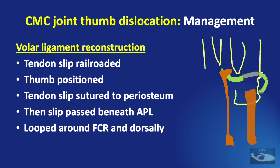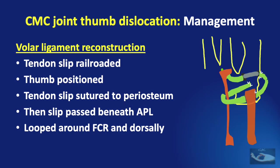The graft is sutured to the periosteum adjacent to the dorsal hole with 3-0 braided polyester suture. The free end of the tendon slip is passed beneath the abductor pollicis longus, to which it is sutured, then looped around the intact flexor carpi radialis tendon and back through the dorsal aspect of the tendon, and finally sutured at the base of the metacarpal. The thenar musculature is then reattached before closing the skin wound.